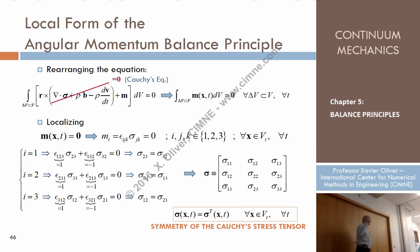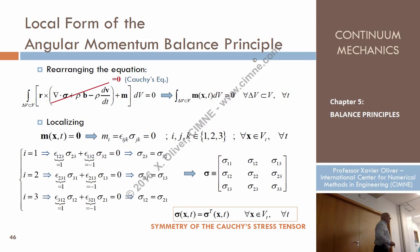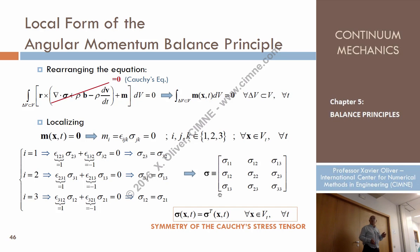So what I obtain at the end of the day is that the angular momentum balance principle, when localized, leads to these equalities: σ_23 = σ_32, σ_31 = σ_13, σ_12 = σ_21 — that is, the symmetry of the stress tensor. When we studied the Cauchy stress tensor earlier, we said it is symmetric but that we would prove it in the next chapter. Here is the proof. The symmetry of the stress tensor is nothing else than the local form of the angular momentum balance principle. That's what is nice in continuum mechanics: you introduce the physics, use the equations developed before, and obtain results — that the stress tensor is, at all points and at all times, symmetric. This is the local form of the angular momentum balance principle.